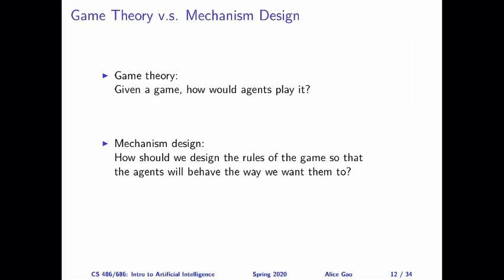So what kind of problems are we really trying to solve with these two areas? For game theory, we're usually given the rules of a game and then we're asking the question of how would the agents — the players in the game — play this game? How would they behave? The direction is that we're given the rules and then we're trying to analyze and figure out how agents would play the game and what strategies they're going to use.